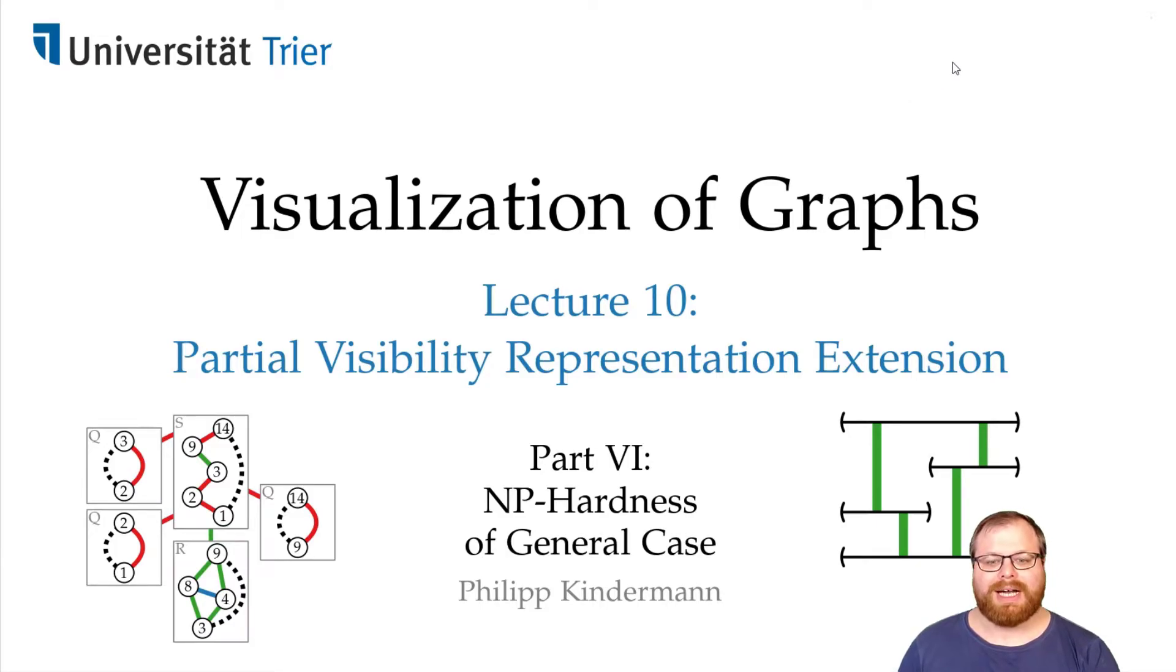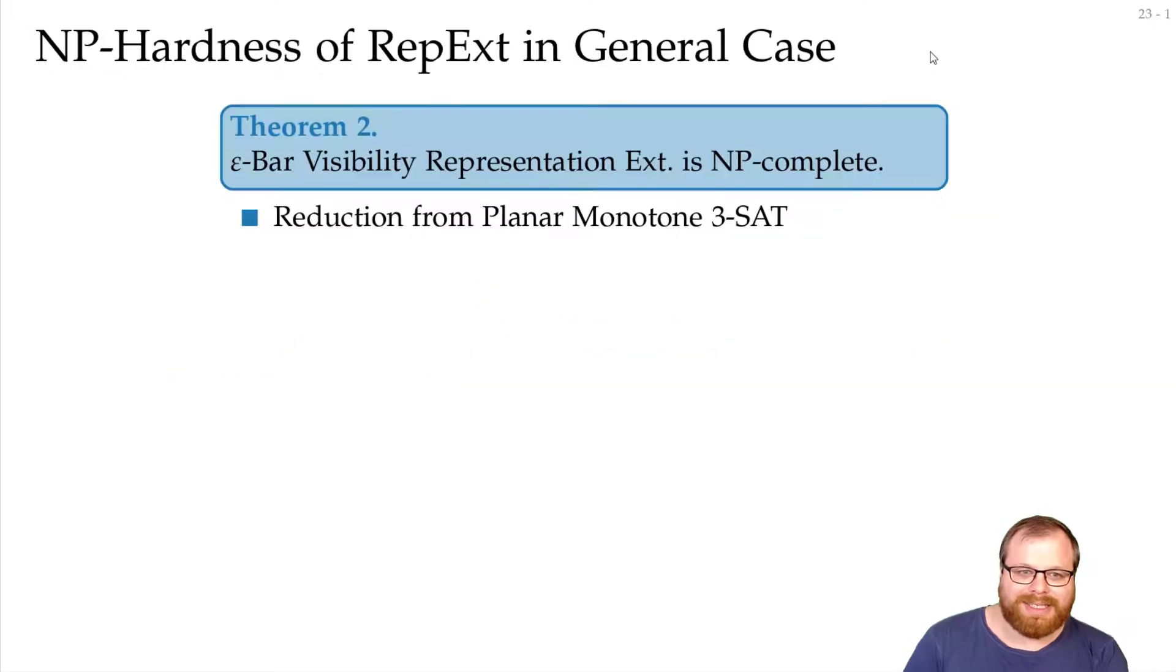In the final part of this lecture, I will show you the NP-hardness for the general case. I think we haven't done NP-hardness proof so far in this lecture, so it's about time. The theorem we want to prove is, in general, it's NP-complete to find an epsilon bar visibility representation extension.